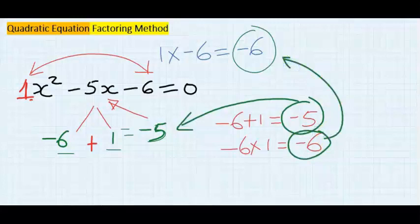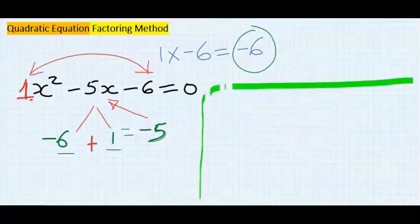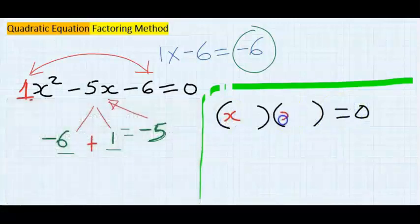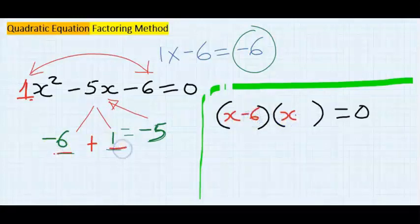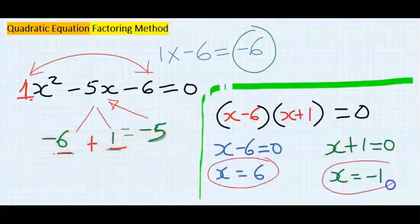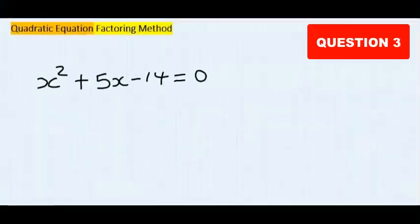So our two numbers are minus six and one. Open two brackets equal to zero with x in each bracket. The two numbers are minus six and plus one, giving answers x equals six and x equals minus one.